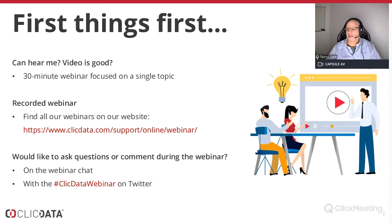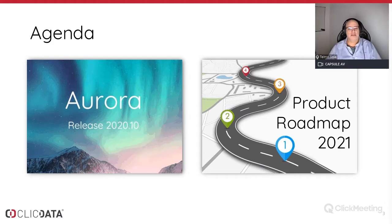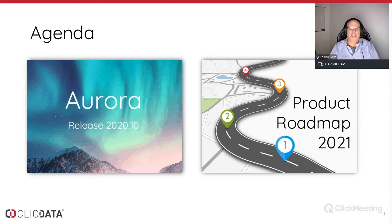Let's talk about the agenda. The first topic is Aurora release 2020.10 — that's the last release of this year. We typically release once a month, but we adjust the calendar based on availability, vacations, and the extent of the work to be done. Then I want to talk a little bit about the product roadmap for 2021.